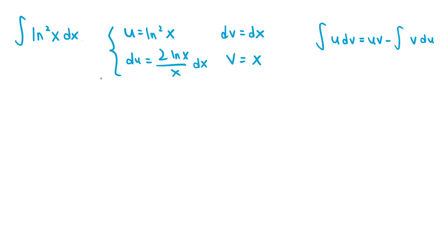If we apply the integration by parts formula, the integral of ln squared of x dx is uv, which is ln squared of x times x. So that's x ln squared of x minus the integral of v du.